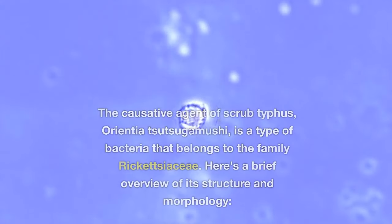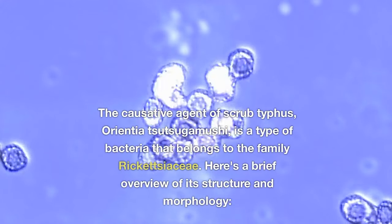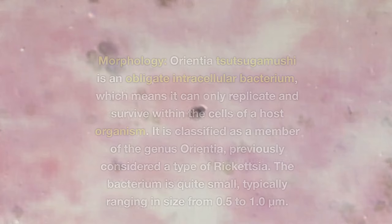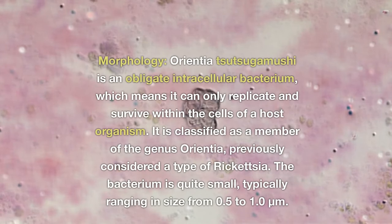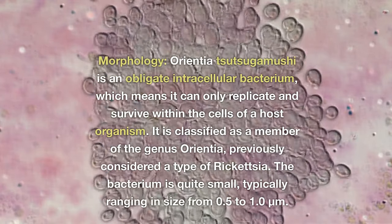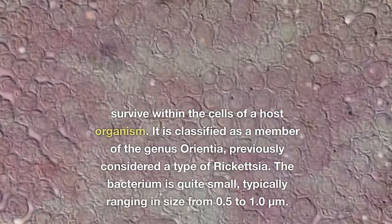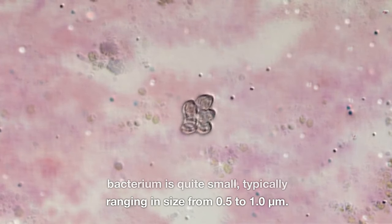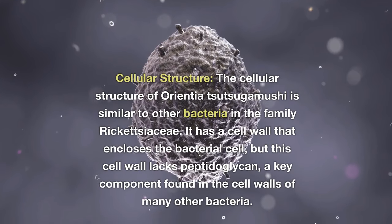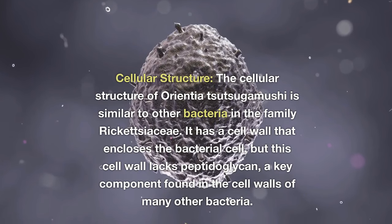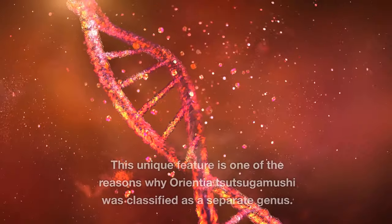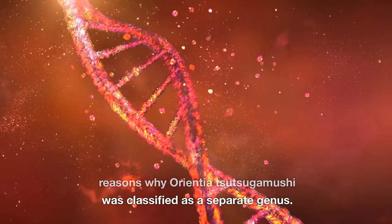The causative agent of scrub typhus, Orientia tsutsugamushi, is a type of bacteria that belongs to the family Rickettsiaceae. Its morphology: Orientia tsutsugamushi is an obligate intracellular bacterium, which means it can only replicate and survive within the cells of a host organism. It is classified as a member of the genus Orientia, previously considered a type of Rickettsiaceae. The bacterium is quite small, typically ranging in size from 0.5 to 1.0 micrometers. Its cell wall encloses the bacterial cell, but lacks peptidoglycan, a key component found in the cell walls of many other bacteria. This unique feature is one of the reasons why Orientia tsutsugamushi was classified as a separate genus.